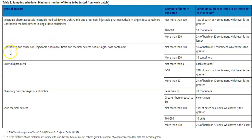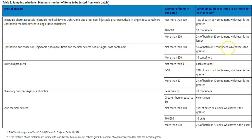The minimum number of items to be tested varies by product type according to pharmacopoeial guidelines. For batches not more than 100 containers, take 10%, meaning 10 containers selected randomly. For more than 100 but not more than 500, take 10 containers. For bulk solid products, pharmacy bulk packages, and antibiotics greater than 5 grams, select 6 containers. The guidelines in USP and Indian Pharmacopoeia are nearly the same.